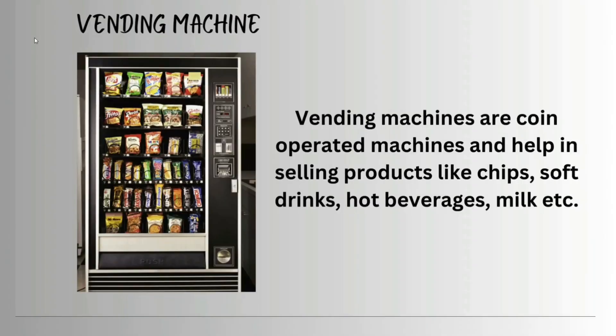Hello guys, welcome back to my channel. Today we are going to see the Verilog project on the vending machine. A vending machine is an automated machine used for selling products when a coin is inserted. In this project we are going to use 5 rupee, 10 rupee, 20 rupee, and 50 rupee coins, and we are going to sell products of 10 rupee and 20 rupee — the product can be anything like chips, milk, or any drinks.